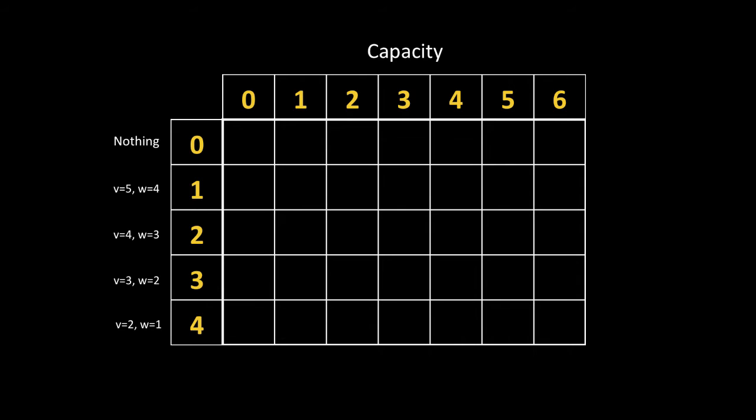To start, we're going to look at the very first row. This represents the absence of an item, so it is clear that all the values in this row should be zero, since there's no way we can get value with no items. So let's fill those with zeros. When we move to the next row, we're only going to be considering the row that comes before us. The red arrow indicates that we haven't included the item, and the green arrow indicates that we have included it. If we haven't included it, then the capacity hasn't changed, so we're still in the same column, and the value hasn't changed, so we simply copy the number over. Looking at the green arrow, you'll notice that we moved over four columns. This is because the first item had a weight of four. We also added five to the value of the cell we're coming from, since the value of this item is five.